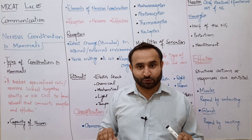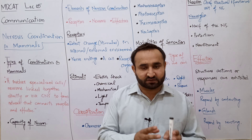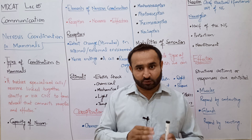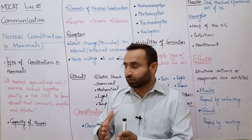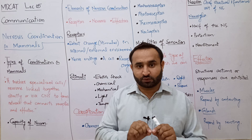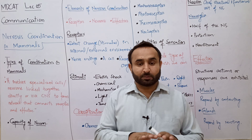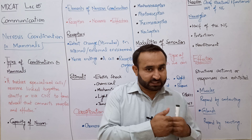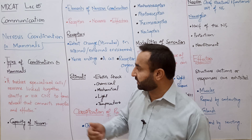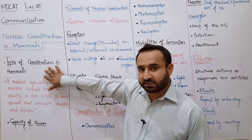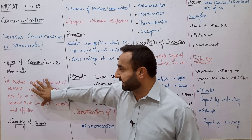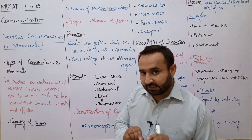Mammals میں coordination کی دو types ہیں: ایک chemical coordination جس میں endocrine glands کے ذریعے hormones پیدا ہوتے ہیں — یہ long term coordination ہوتی ہے۔ دوسری ہے nervous coordination جسے short term coordination کہتے ہیں، جس میں مختلف neurons آپس میں connected ہیں اور ایک rapid coordination بناتے ہیں۔ اس topic میں ہم nervous coordination کو define کریں گے۔